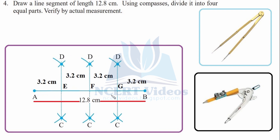Put your compass at B and open to a radius greater than half of AB. Make two arcs above and below, then do the same from A with the same radius. We get two points and connect them, thereby dividing AB in half.